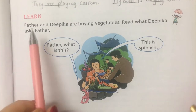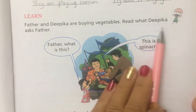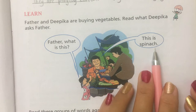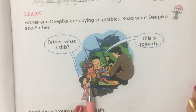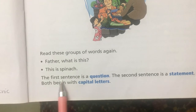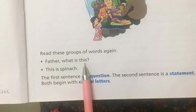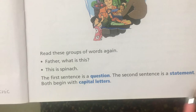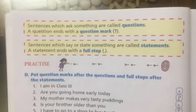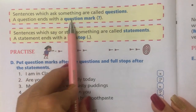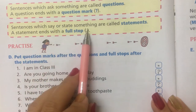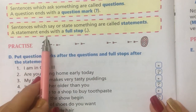Now just learn. Father and Deepika are buying vegetables. Read what Deepika asks father. Father, what is this? This is spinach. So the first sentence is a question: Father, what is this? The second sentence is a statement: This is spinach. Both begin with capital letters. Sentences which ask something are called questions, and a question ends with a question mark. Sentences which say or state something are called statements, and a statement ends with a full stop.